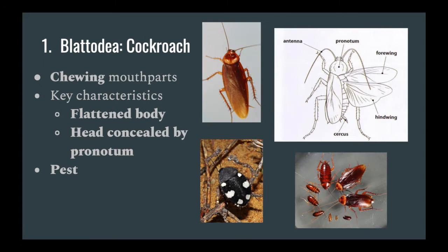First we have Blattodea, or more commonly known as cockroaches. Cockroaches are typically seen as a pest and like warm and wet environments. Cockroaches are always going to be flattened and will always have their head hidden by their pronotum. The pronotum is akin to the thorax.